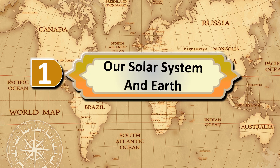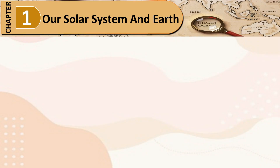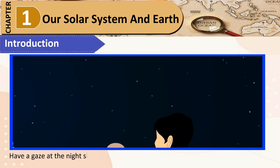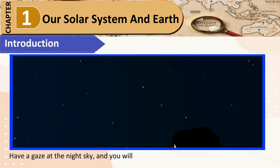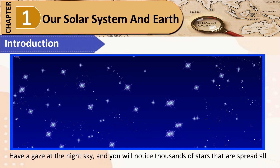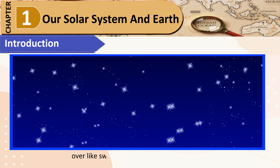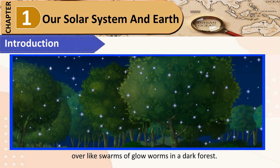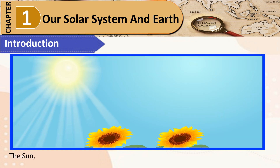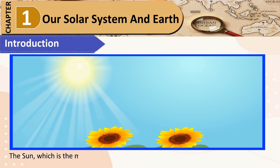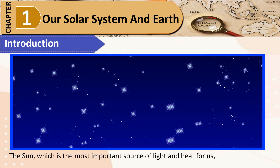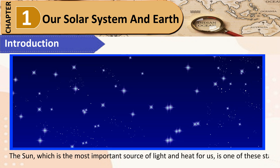Chapter 1: Our Solar System and Earth. Have a gaze at the night sky, and you will notice thousands of stars spread all over, like swarms of glowworms in a dark forest. The Sun, which is the most important source of light and heat for us, is one of these stars.